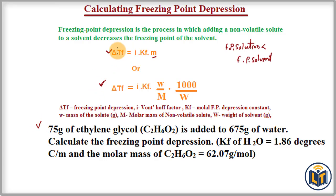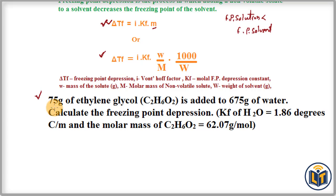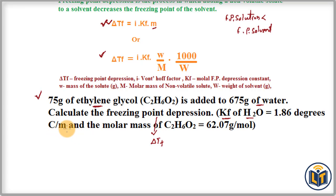I will show you how both formulas give the same freezing point depression value by applying them to this problem. The problem states: 75 grams of ethylene glycol, a non-volatile solute, is added to 675 grams of water. Calculate the freezing point depression. The freezing point depression constant Kf of water is 1.86 °C/m, and the molar mass of the solute is also given.